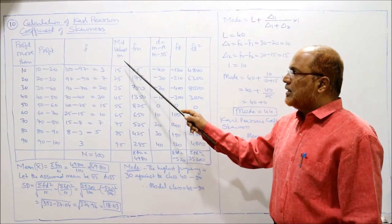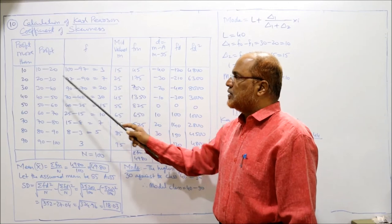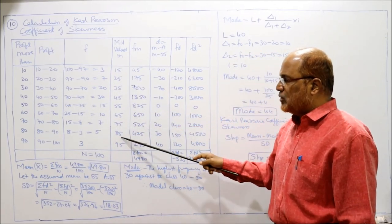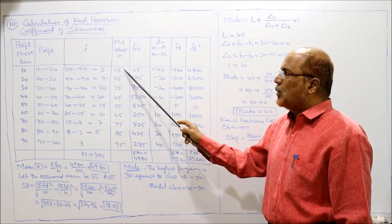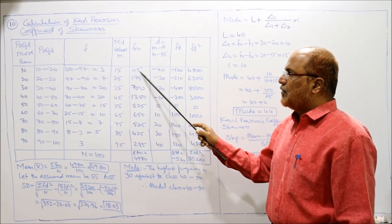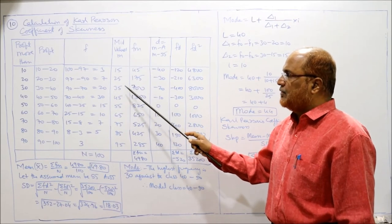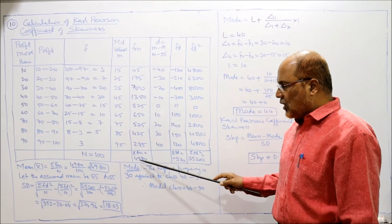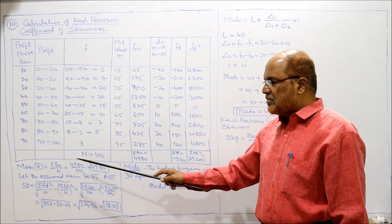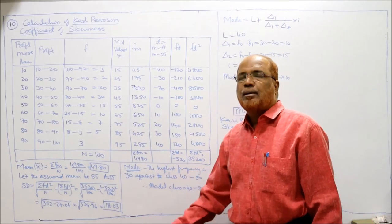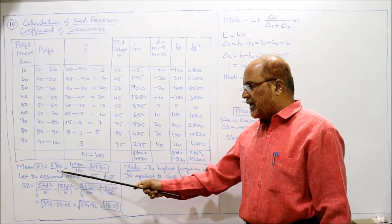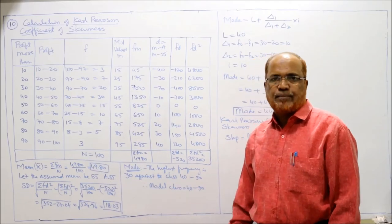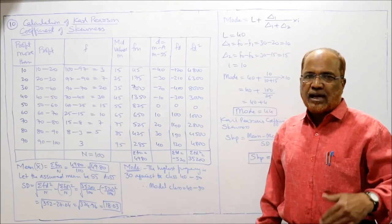Mid values: (10+20)/2=15, (20+30)/2=25, 35, 45, 55, 65, 75, 85, 95. Multiplying f×m and summing: Σfm = 4980. Mean = Σfm/n = 4980/100 = 49.8.